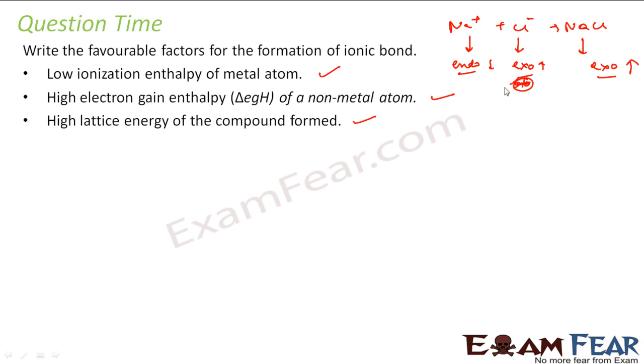High value of this, this is low value of this. And high because this is exothermic always. The lattice energy is always exothermic. So we are looking for high value of this lattice energy. Since the ionization energy is always endothermic, so we are looking for low value of this. Electron gain enthalpy can be exothermic or endothermic both. So we are looking for high exothermic value of this. Lattice energy is always exothermic so we are looking for high value of this. So if you have these it is a favorable condition for forming ionic bond.